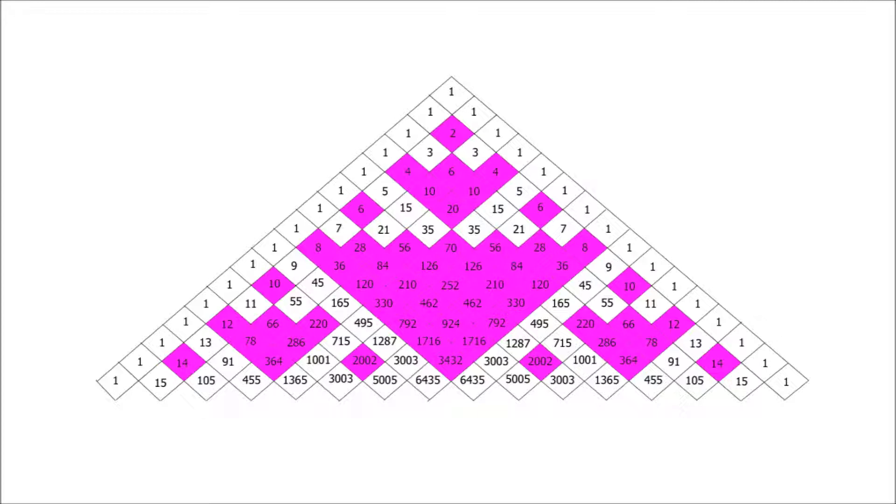If we were to continue the pattern going downwards, could you predict what's going to happen next? Well, one way of thinking about this is to look at what we've actually got in the last row. Look at the sort of numbers we've got there. We don't actually have to work out what the numbers in the next row are going to be. We don't need to add together the pairs of numbers in our last row to get the next row.